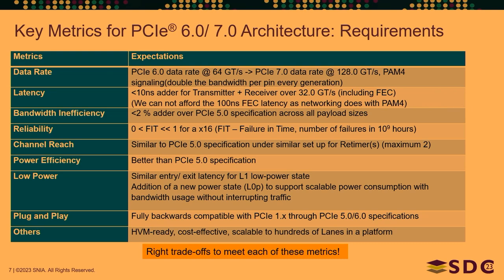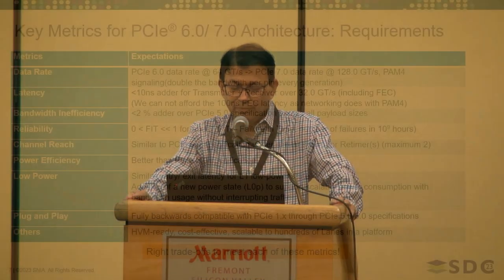What are the key metrics? It always helps to start with key metrics. Before specification work starts, we give guidance to the work group saying these are the criteria that must be met, otherwise people will innovate in different directions. The data rate — we need to double it, that goes without saying. At 64 gig, it's well known that it's not going to be NRZ, so instead of debating PAM8 or PAM16, we go with PAM4 signaling.